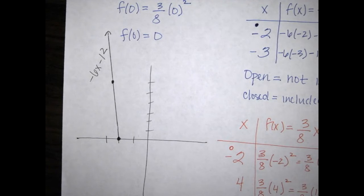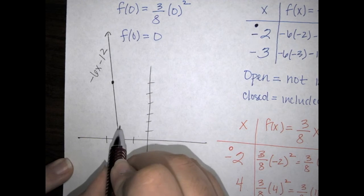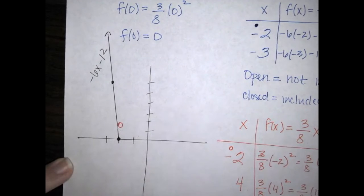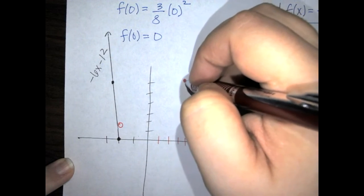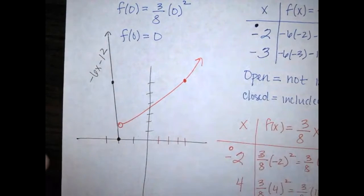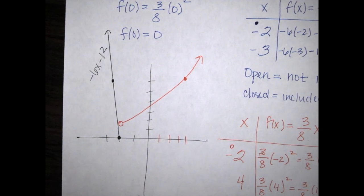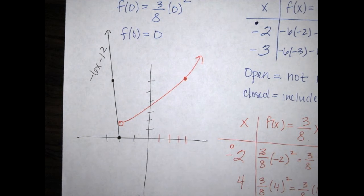For the second piece — the red parabola — I start at negative 2 where y = 3/2, which is 1.5, and draw an open circle since it's not included. The second point is 4, 6 — closed and included. Since it's a parabola I add a slight curve. What makes it piecewise is having two individual functions graphed together sharing a bound value, where that bound is included in only one of them.